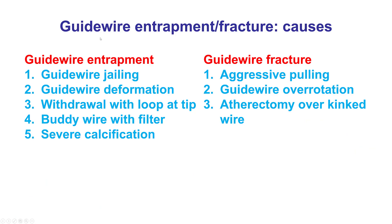What causes guidewire entrapment and fracture? For entrapment, a common cause is jailing the guidewire during bifurcation stenting, especially if there is a loop at the tip of the jailed guidewire while it is being pulled back. Another cause is guidewire deformation, for example when using the knuckling technique for CTO sub-intimal techniques.